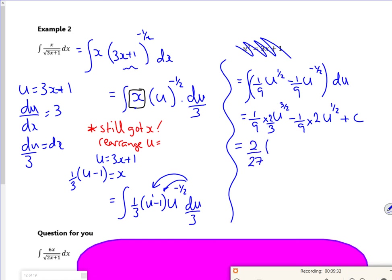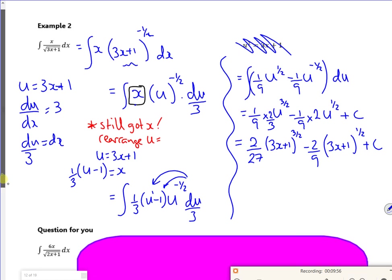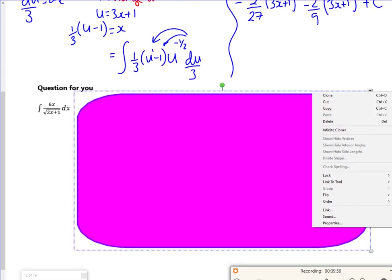And then I'll replace the u. The u is a 3x plus 1. Then I've got 2 over 9, 3x plus 1 to the half. Let's see. Can we check that? Make sure it's right. Can we actually find the lesson? Yeah, perfect. So there's one for you. We'll ditch the...